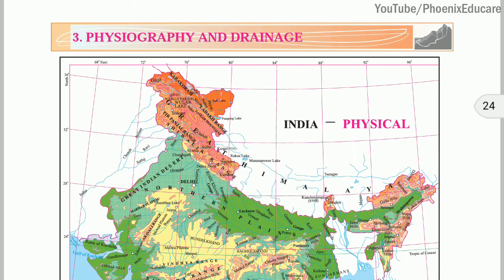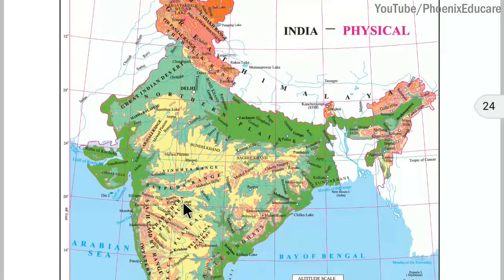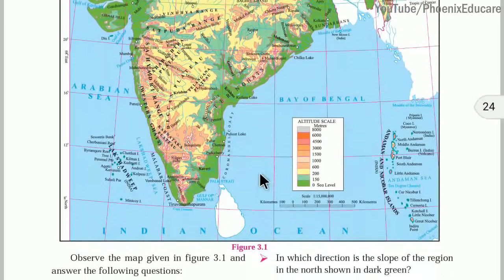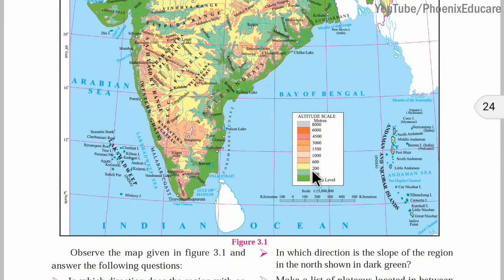Let us begin with India's Physiography first. If you see this map of India, you are seeing different shades. These shades resemble the height or altitude of the area. The grey region is the world's topmost peak, more than 8000 meters. The reddish part is higher ground, the yellow region is the plateau region above 200 meters, and the green region is near sea level.